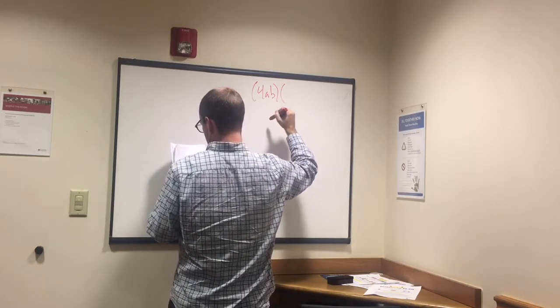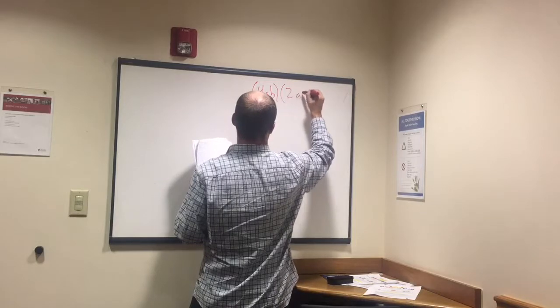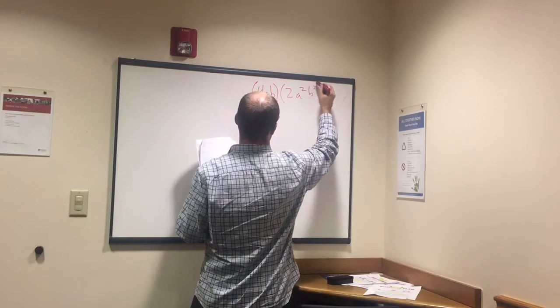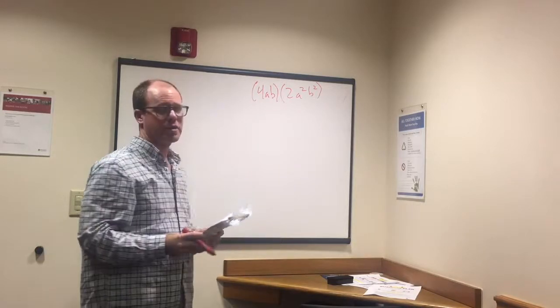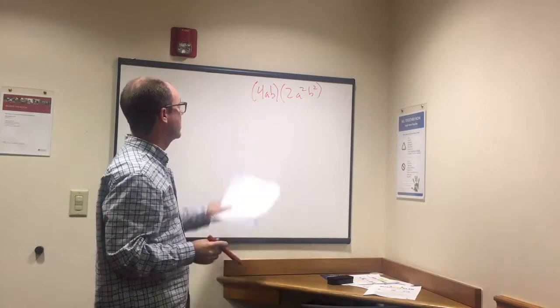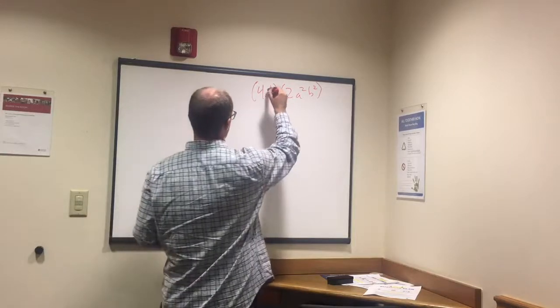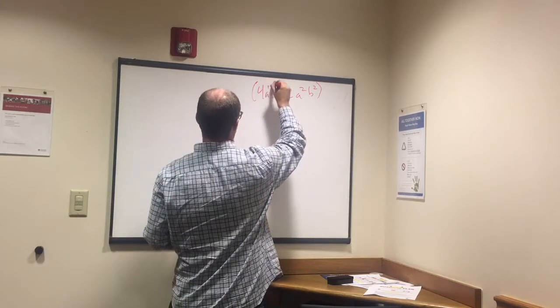4ab times 2a squared b squared, how do we do this? What I mean when I say we add the exponents is remembering that when we see 4ab it essentially means 4a to the first b to the first.